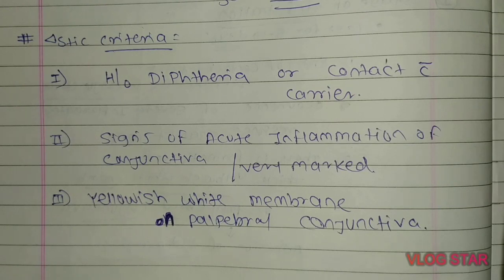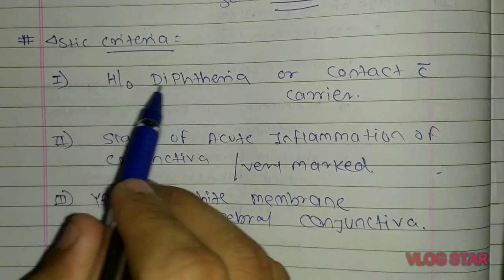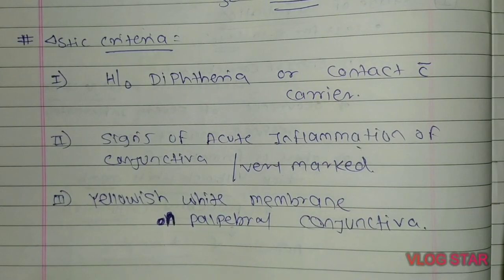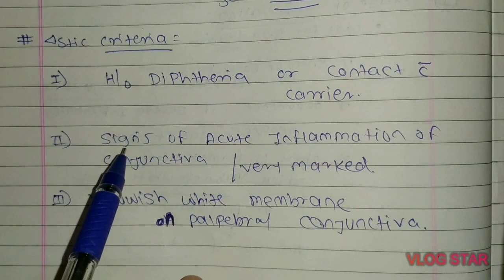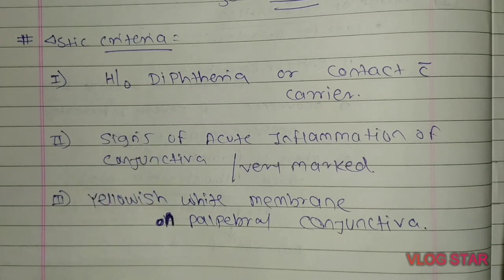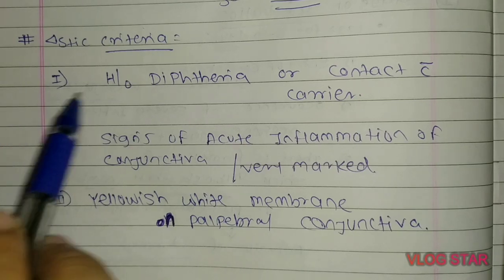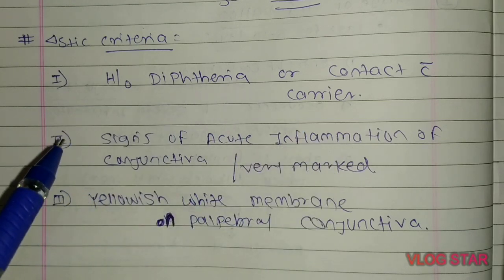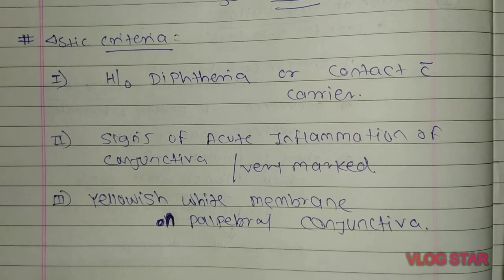Let's go to the diagnostic criteria for Membranous Conjunctivitis. A true and pure case consists of the following features: the patient may have a history of diphtheria or contact with a carrier; there will be marked signs of acute inflammation of the conjunctiva; and there will be a presence of yellowish-white membrane on the palpebral conjunctiva.